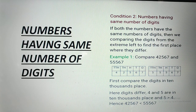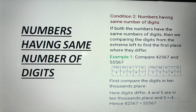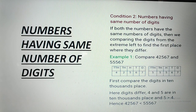But if the digits at the 10,000s place are the same, then we compare the thousands place. If those are also the same, we compare the hundreds place, and so on. This way we can determine which number is smaller and which is bigger.